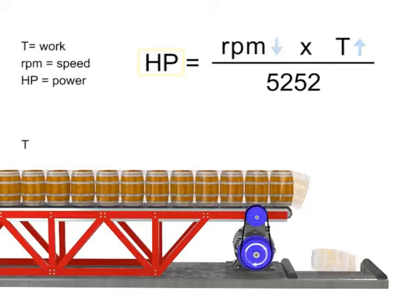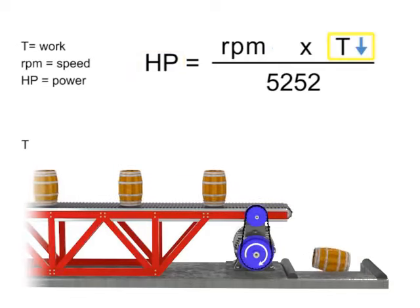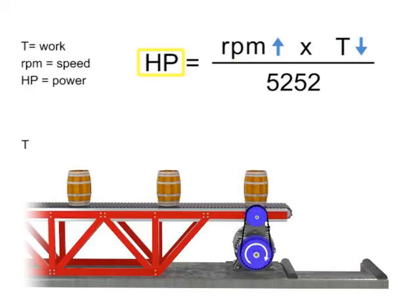Similarly, the opposite is true. If the torque decreases, the speed of the conveyor increases and the horsepower generated by the motor remains constant.